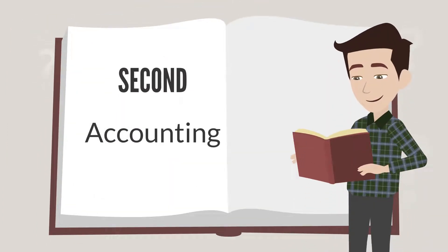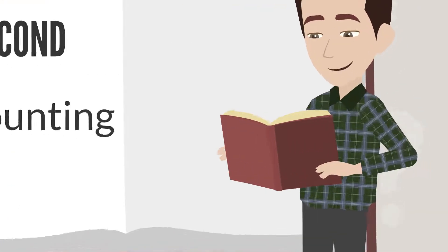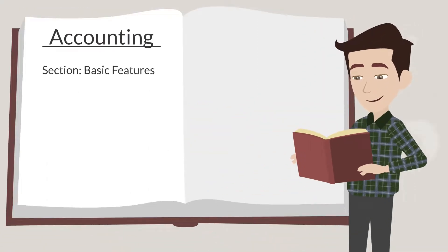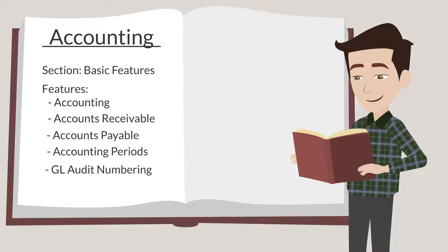Next up, we have the accounting subtab, which includes three sections: basic features, advanced features, and multi-book accounting. The basic features are arguably the most important. Interestingly, the first of the accounting features is simply called accounting. Presumably, if this feature isn't turned on, then the other accounting features wouldn't have the information they need to work properly. This section also includes features like accounts receivable and accounts payable, as well as accounting periods and GL audit numbering.